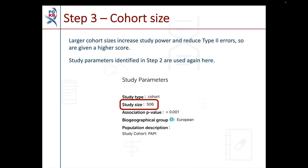The cohort size of the study is scored in step 3. We use the cohort size from the same set of study parameters as the p-value used for step 2. Larger cohort sizes are given a higher score.